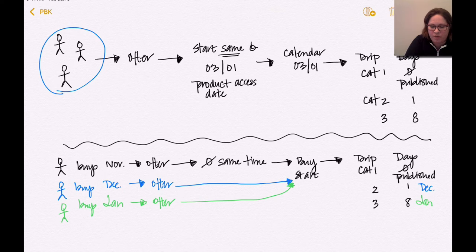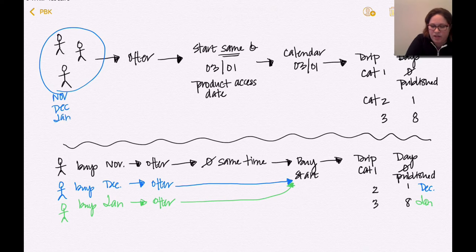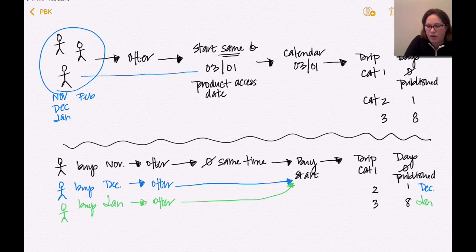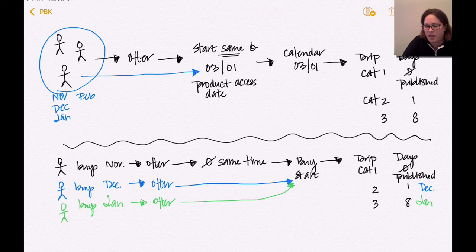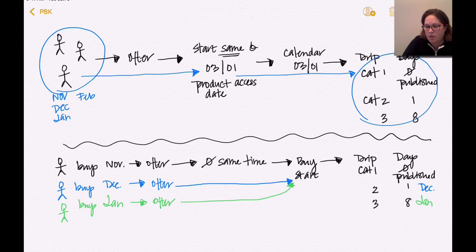So this first group of people, even if they're buying in November, December, January, February, they're buying at different times. They're all going to have the same product access date. So here, they're going to always stay together. This is going to match.